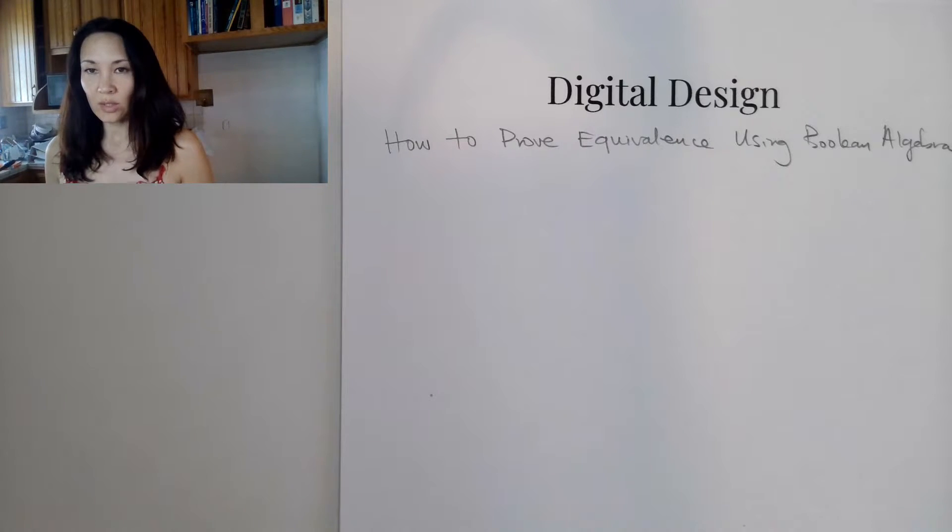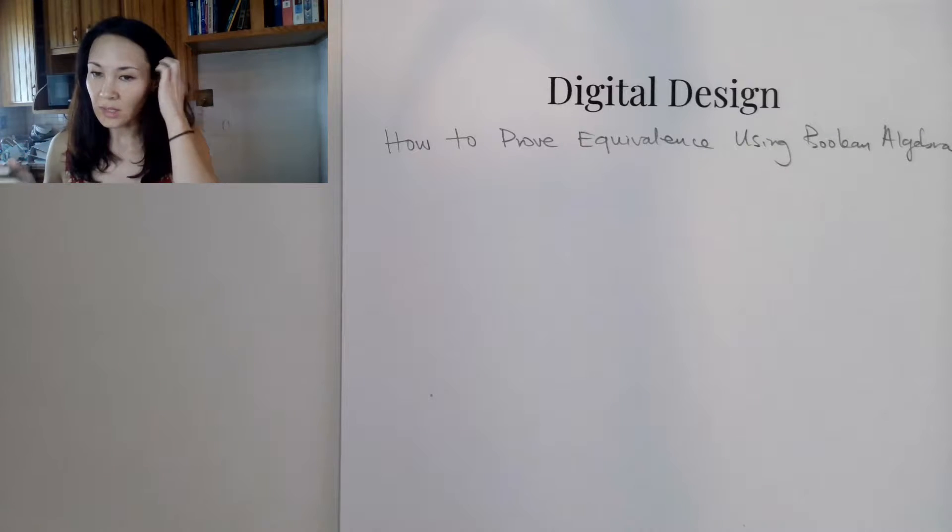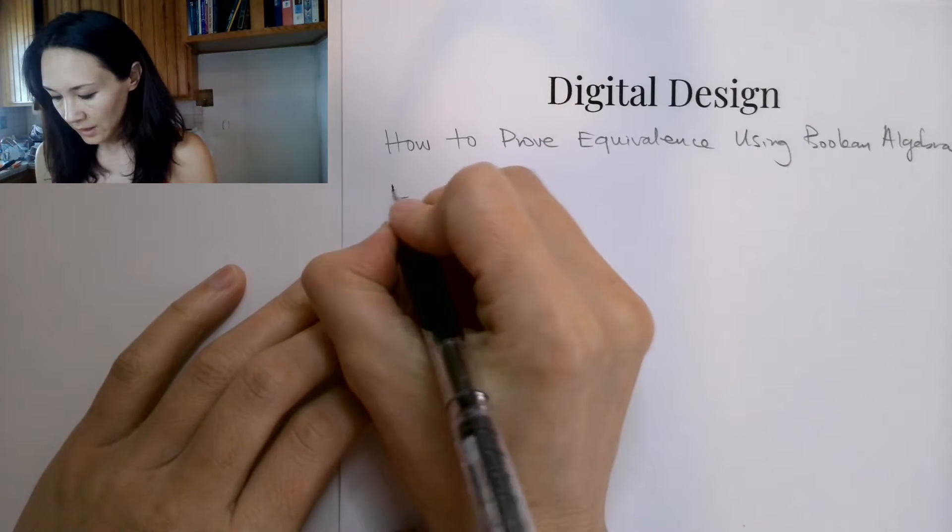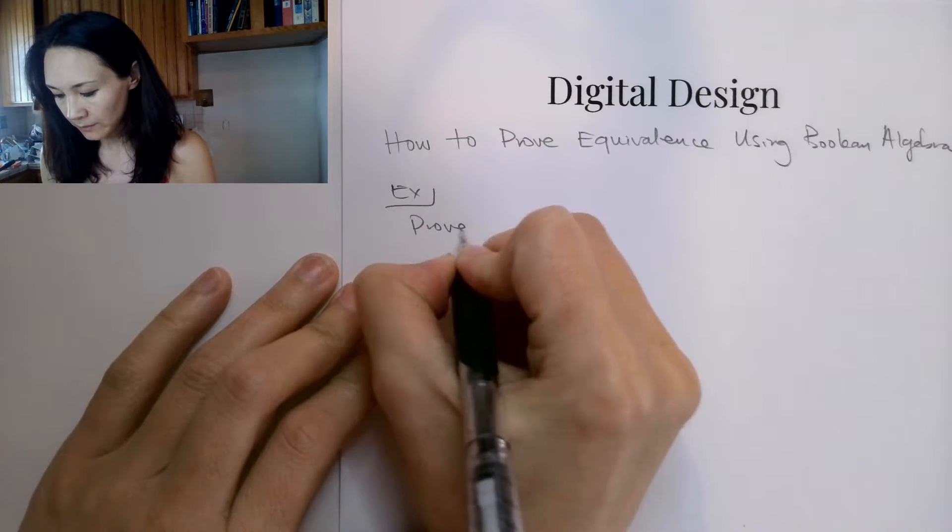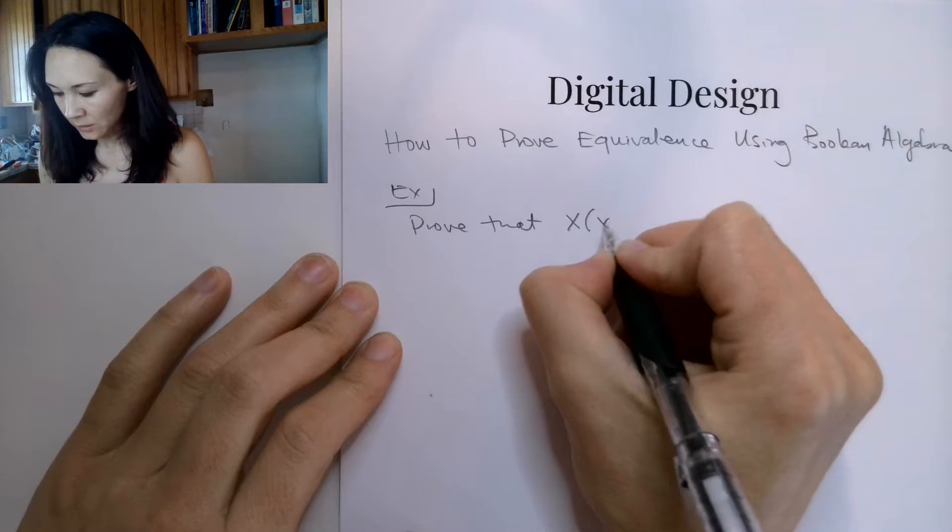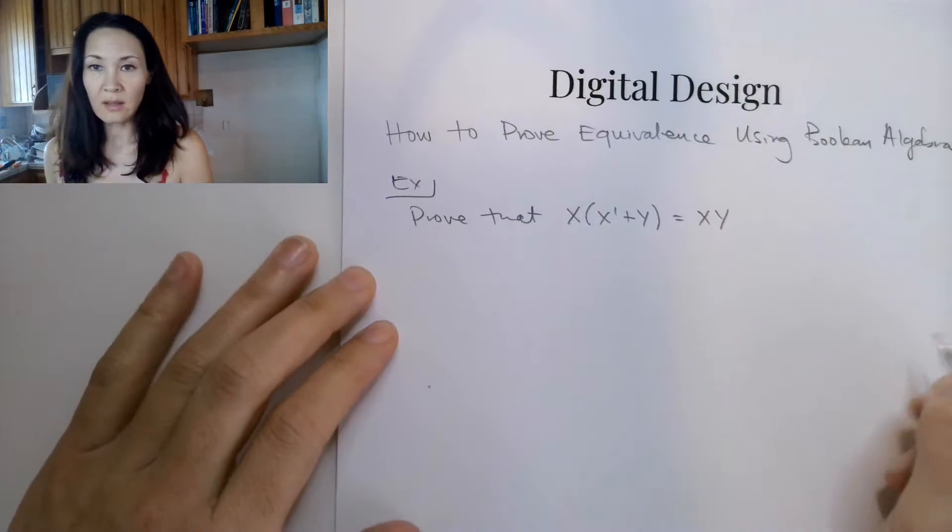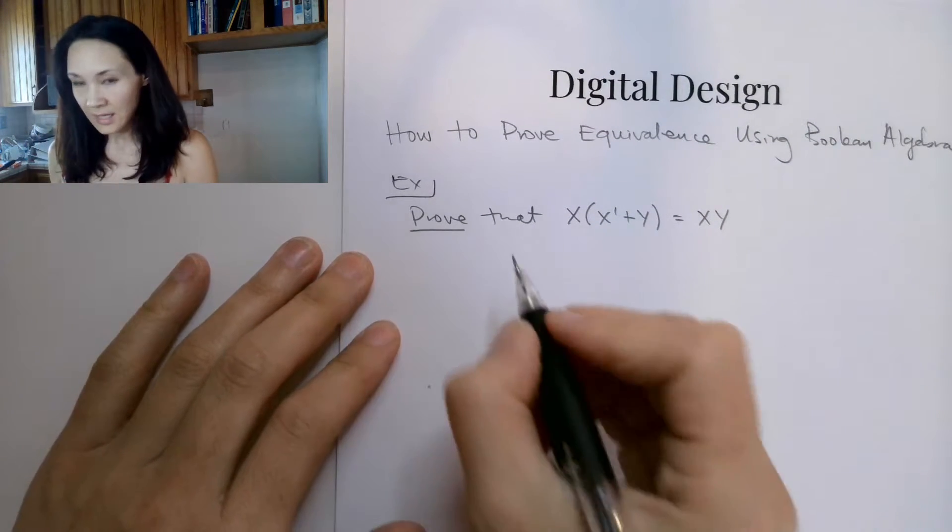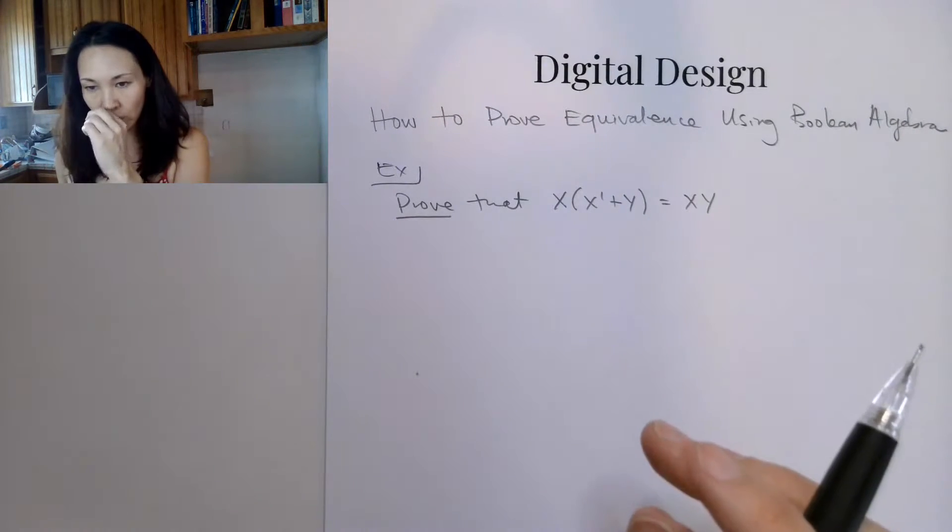Now I'm going to show you how to prove equivalence between two Boolean functions using Boolean algebra. For example, suppose we are asked to prove that x ended with x naught or y is equal to xy. So the key is what actually constitutes a proof? How do we go about proving this?